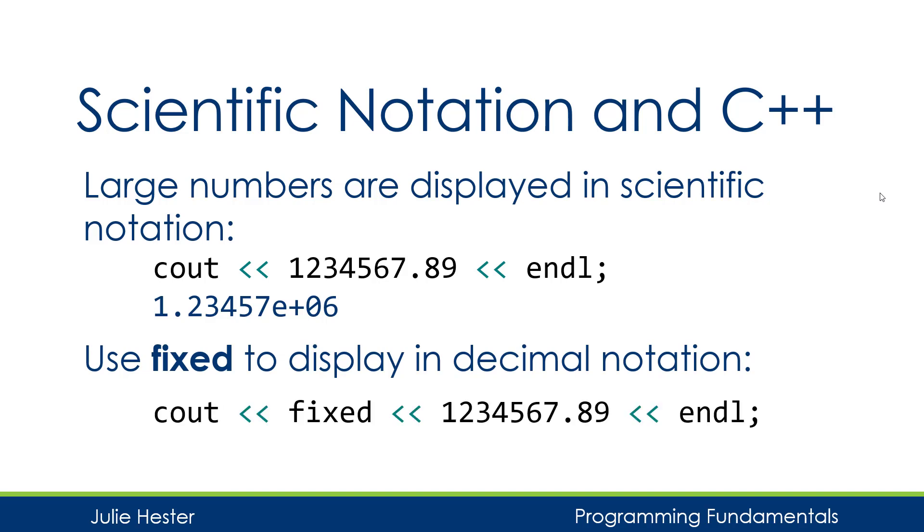I'll just put the word fixed before the number as an additional component being sent to the cout object. And now when I display the number, I'm going to see all of the significant digits. They've been there all the time. But now I'm not going to see it in scientific notation. And I'm going to see one other thing here.